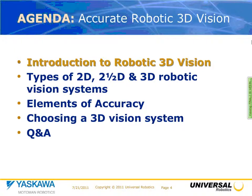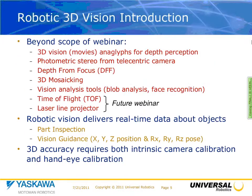Robotic 3D vision — what we're not going to talk about: it's very difficult to jam all pertinent technical information into one hour. We're not talking about 3D mosaic, depth from focusing capability, time of flight, or laser vision analysis tools. What we are going to zero in on is robotic vision for part inspection and vision guidance — giving you six degrees of freedom of information to drive a robot. Note that 3D accuracy requires both intrinsic camera calibration and hand-eye calibration.